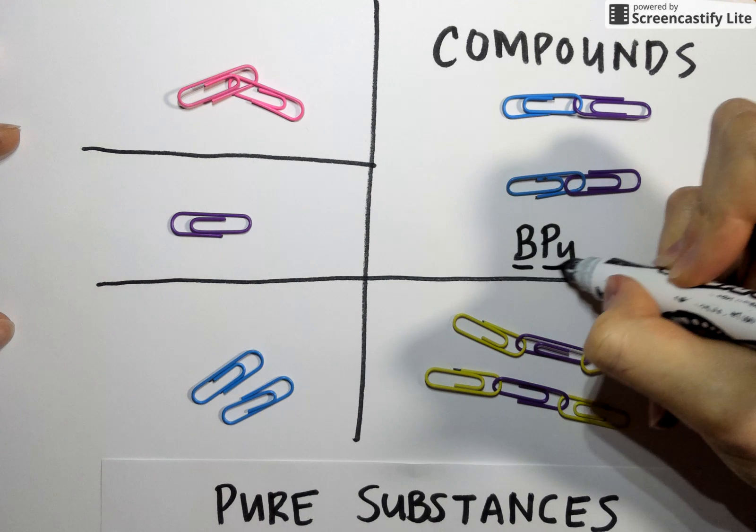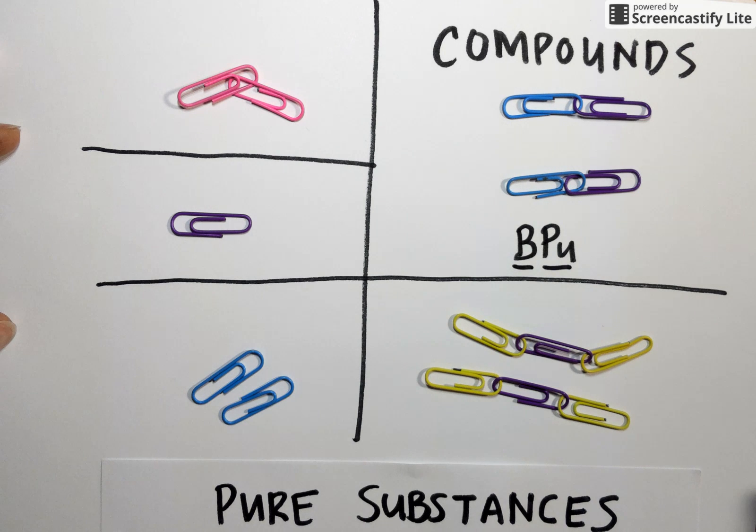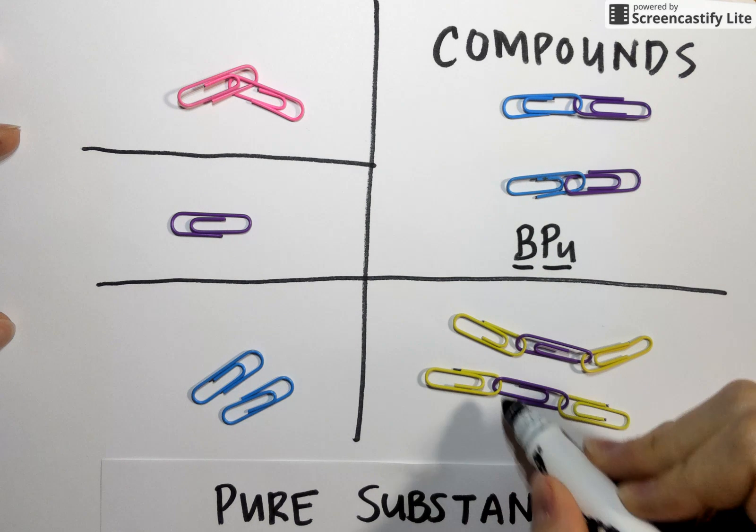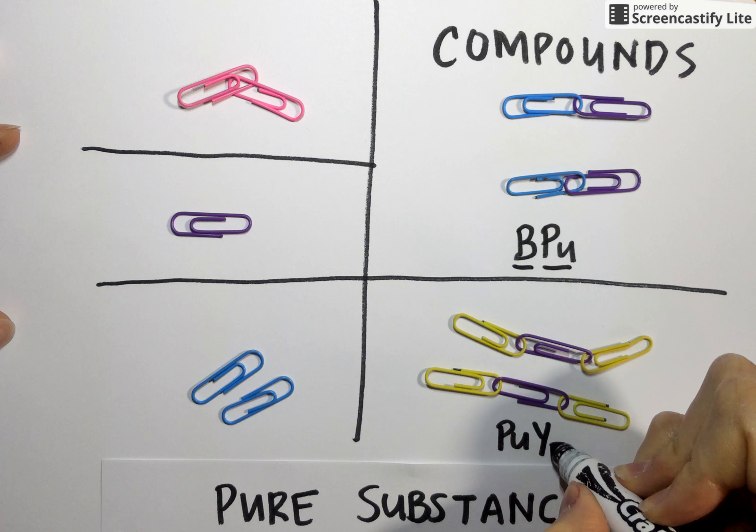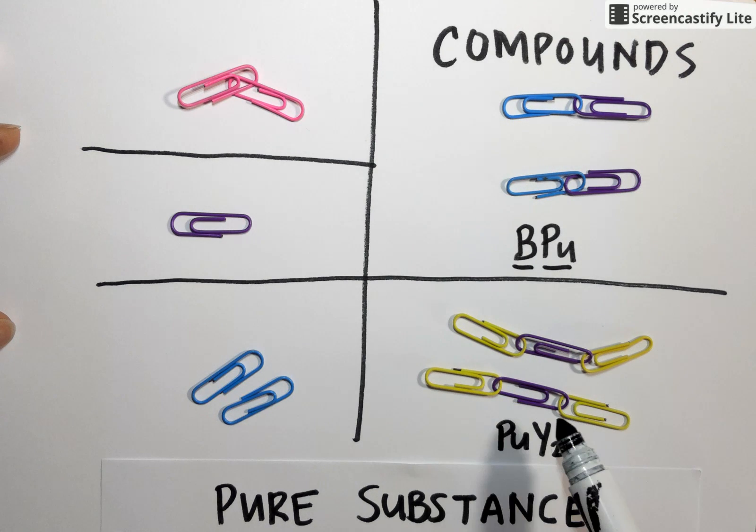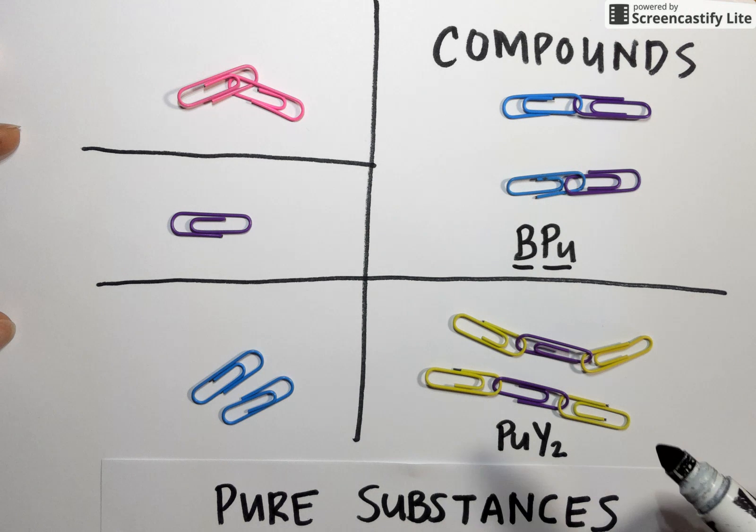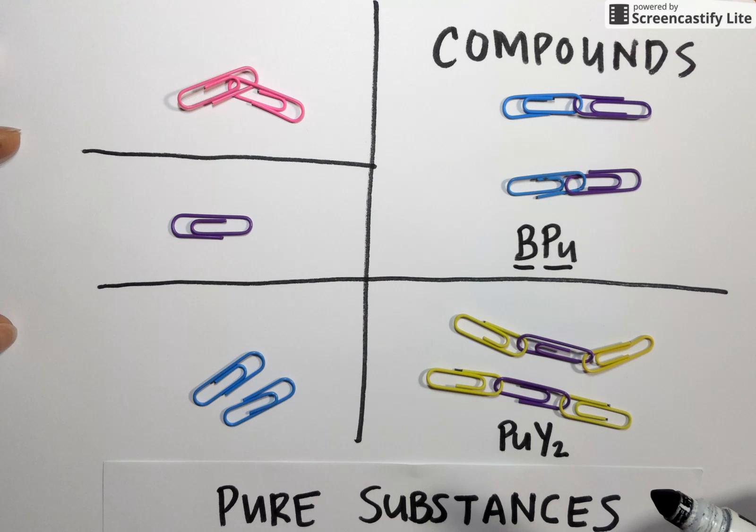However, the Bs and the PUs are, of course, different. Same here. Every particle in this box is going to be PUY2. So different atoms, but each particle is identical. That's what characterizes a compound.